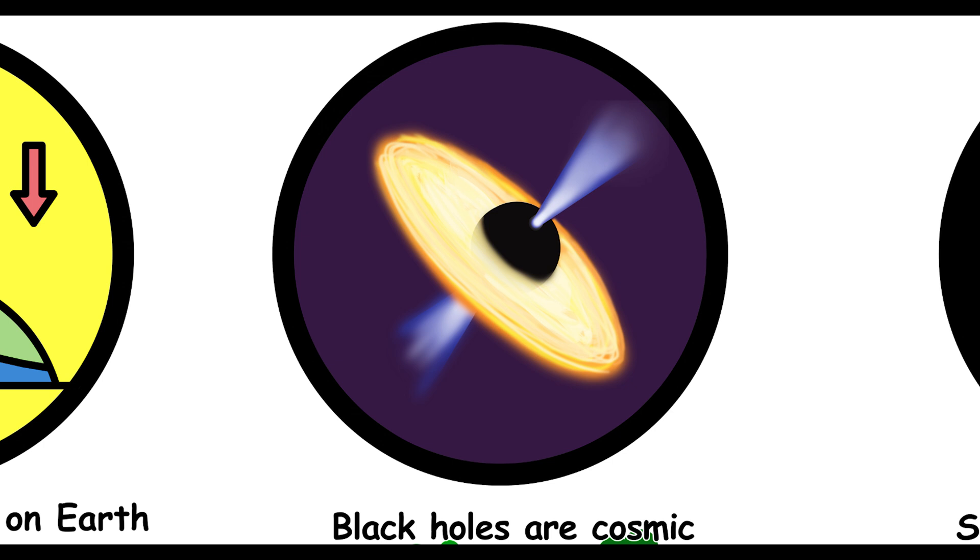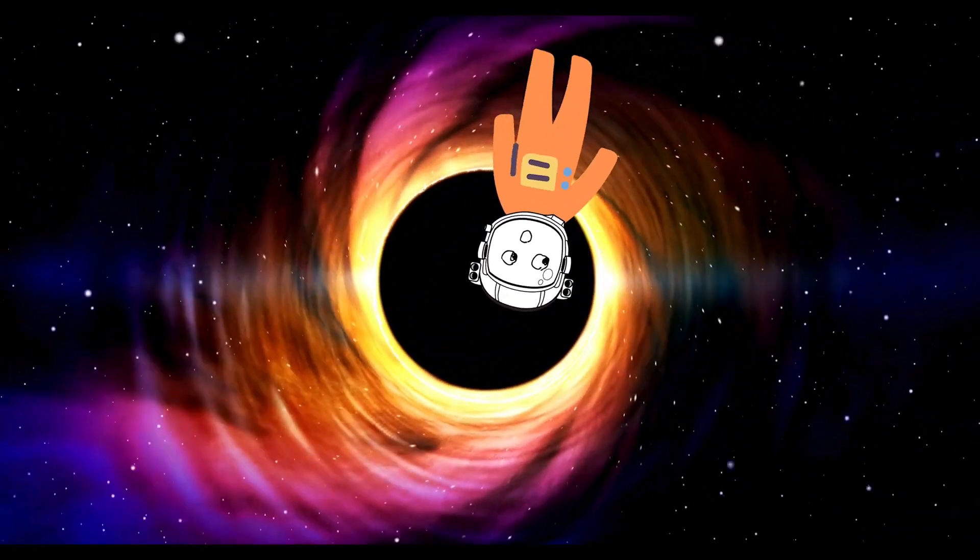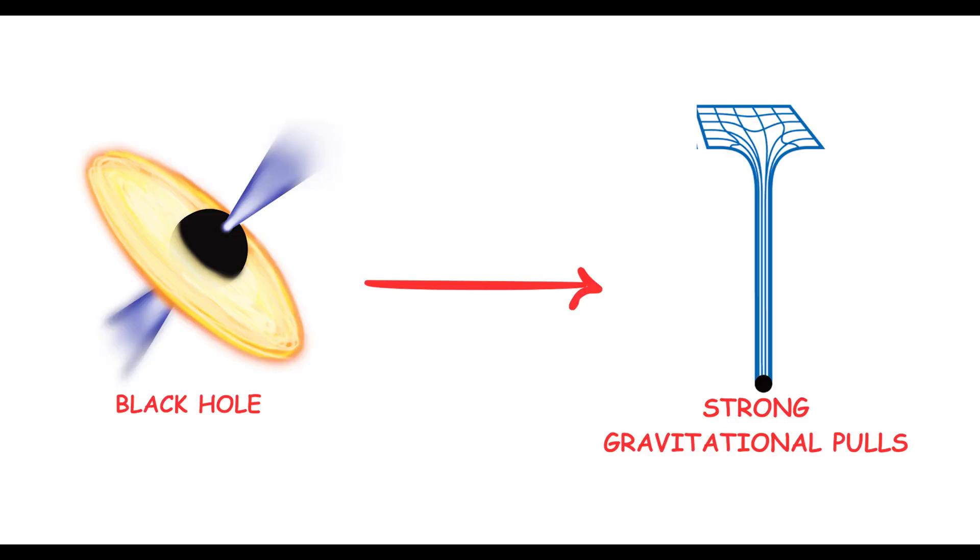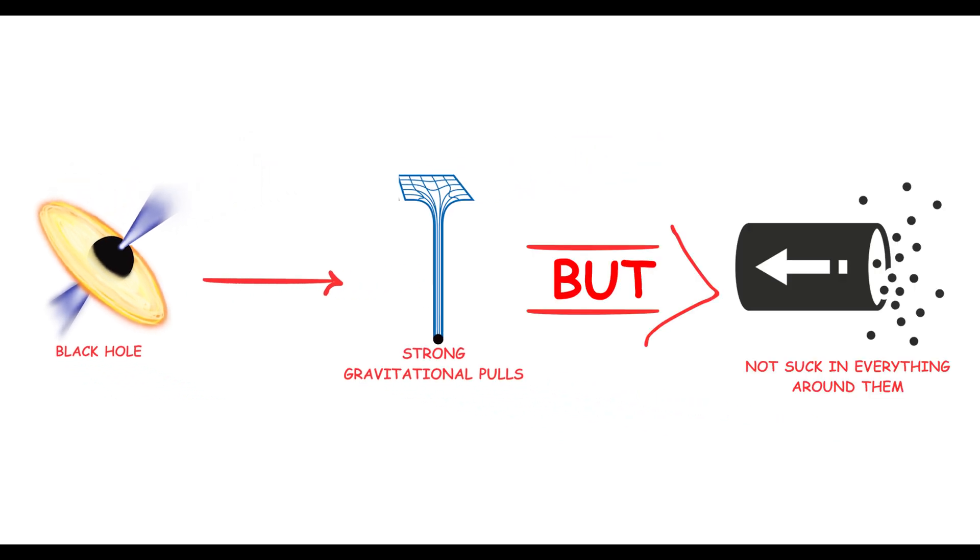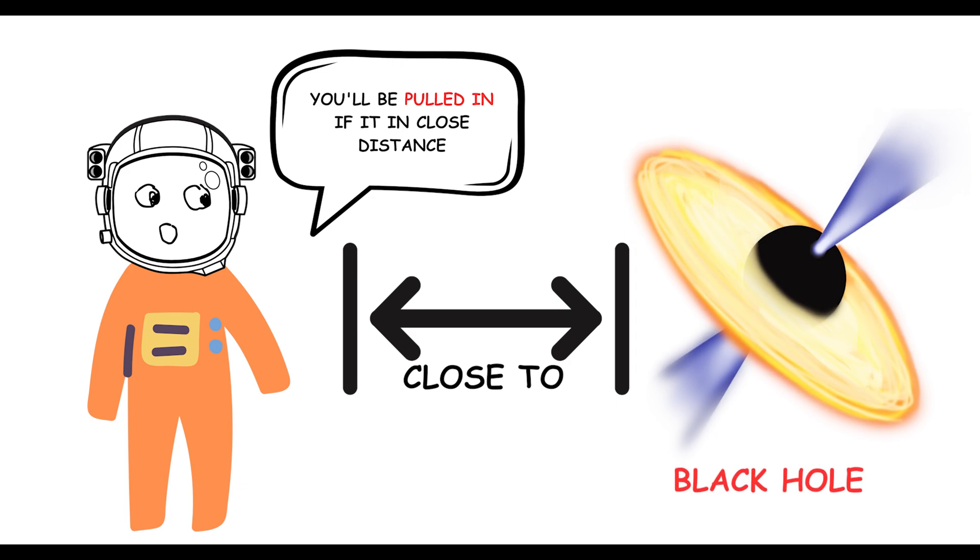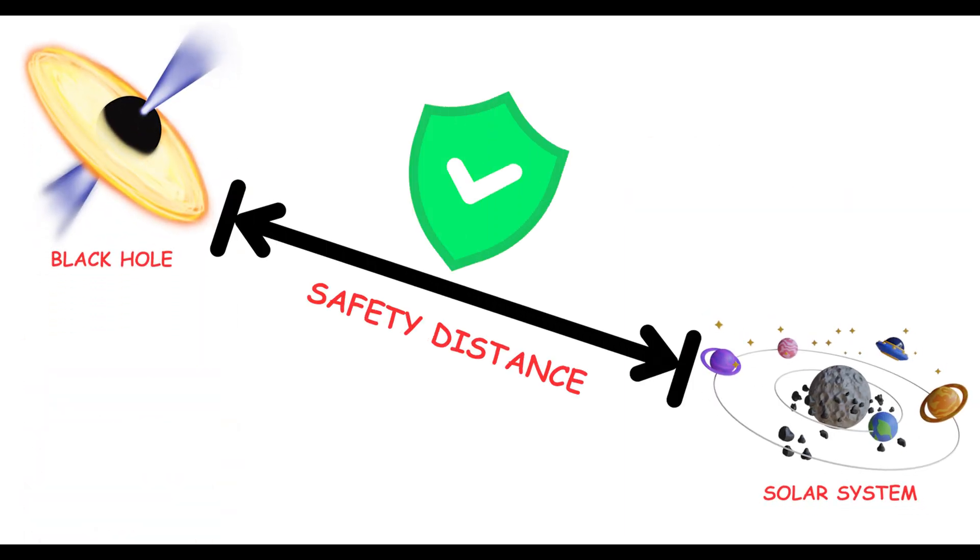Black holes are cosmic vacuum cleaners. Think black holes suck up everything like cosmic vacuum cleaners? Not quite. Black holes have strong gravitational pulls, but they don't indiscriminately suck in everything around them. Objects need to be very close to a black hole to be pulled in. So, our solar system is safe from being vacuumed up by any nearby black holes.